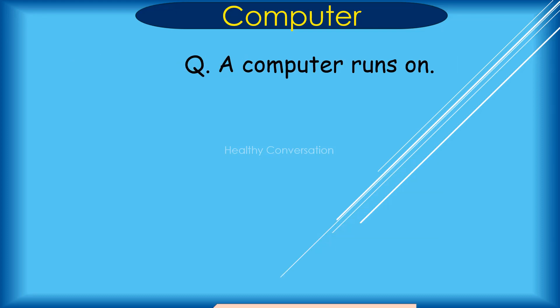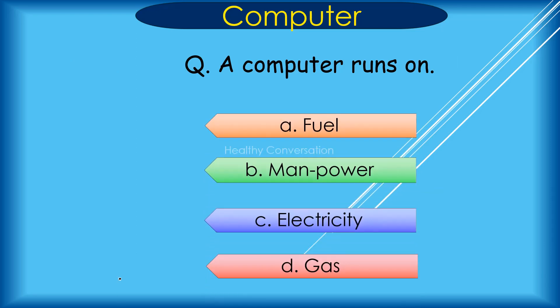Question: A computer runs on A. Fuel, B. Manpower, C. Electricity, D. Gas. Correct answer is C. Electricity.